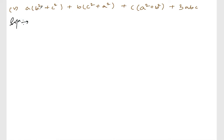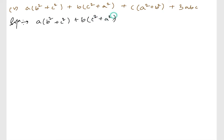So we write: a(b² + c²) + b(c² + a²) + c(a² + b²) + 3abc. What we do is split the 3abc term — write it as abc + abc + abc.